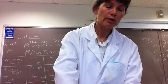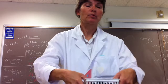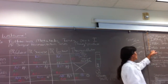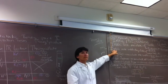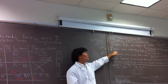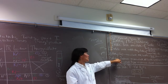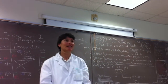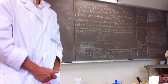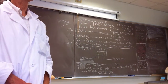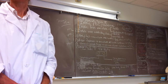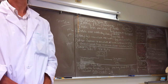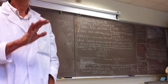Notice a pattern in the first three IMVIC tests: positive for Indol is red, positive for methyl red is red, positive for VP is red. So on the lab practical, if you can't think, your default answer for a positive IMVIC test is red - three times out of four you'll be correct.